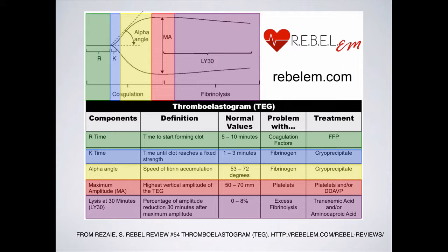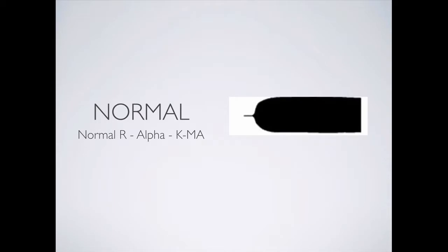We're CRASH-2 believers, and the cost-benefit of giving tranexamic acid makes it very hard for us not to give it as an institution. We tend to give it early when we recognize the need for massive blood transfusion, especially because we serve a very small catchment area — patient transport from one end of Kuwait to the other is about two to three hours at most. We're more likely to get traumas early that fit the CRASH-2 criteria, and we haven't had any major issues with it up to this point.